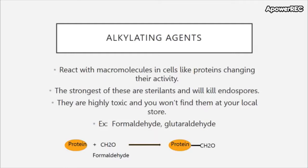Next are the alkylating agents. These are molecules that essentially alkylate proteins — they react with macromolecules in the cell by combining with them, changing their form or function. Two examples are formaldehyde and glutaraldehyde. These are very strong chemical antimicrobials and can also kill endospores. You generally don't find these in your typical local store.